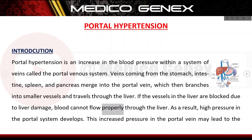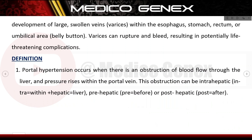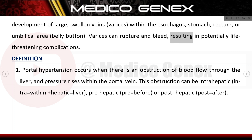If the vessels in the liver are blocked due to liver damage, blood cannot flow properly through the liver. As a result, high pressure in the portal system develops. This increased pressure in the portal vein may lead to the development of large swollen veins — varices — within the esophagus, stomach, rectum, or umbilical area.